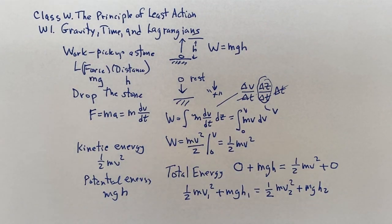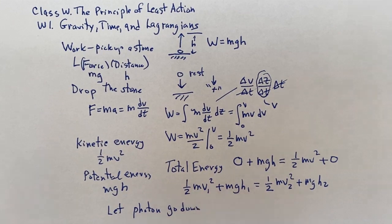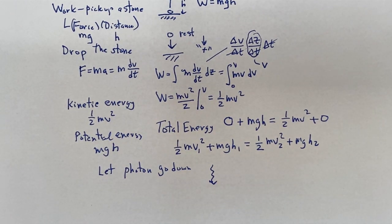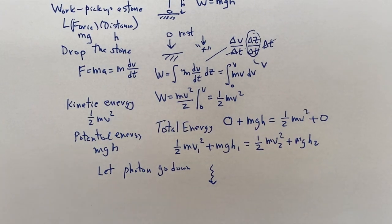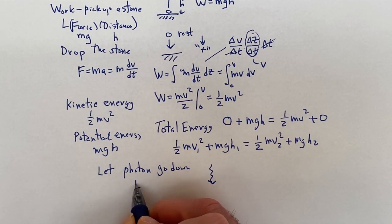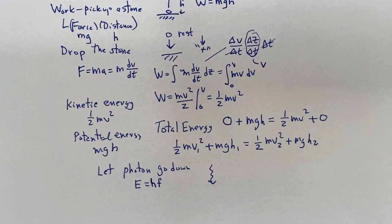Now we're ready to drop a photon — meaning let a photon travel downward. An experiment like this was done in the 1960s. The photon gains energy; since you can't change the speed of light, the wavelength shifts instead. Using E = hf, gaining energy means gaining frequency — a blueshift. Going up, the light would redshift and lose energy.